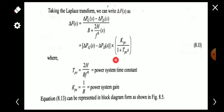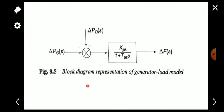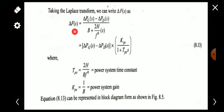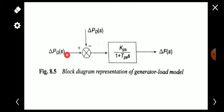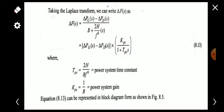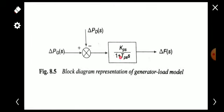This equation can be represented using a block diagram. ΔF(s) is the output. ΔPG(s) is given to the positive input and ΔPD(s) to the negative input of a summing junction, giving ΔPG(s) − ΔPD(s). This passes through the transfer function Kps / (1 + Tps·s) to produce ΔF(s). This is the block diagram representation of the generator load model.